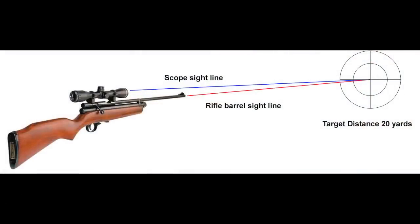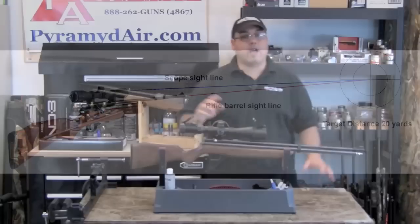Take a look at the following photo. This is a typical setup. The scope is mounted sort of high because you need access to load the pellets. Now, this is not to scale and I'm not an engineer, but you definitely get the idea. If I zero this setup at 20 yards, then as long as every shot I take is at 20 yards, I'm golden.